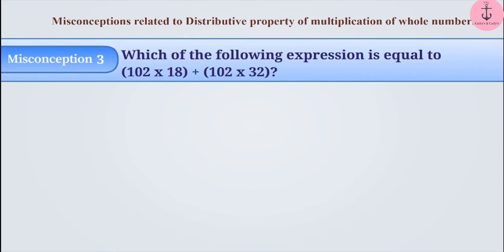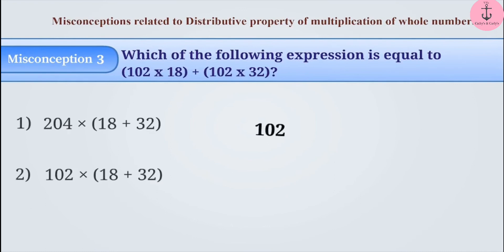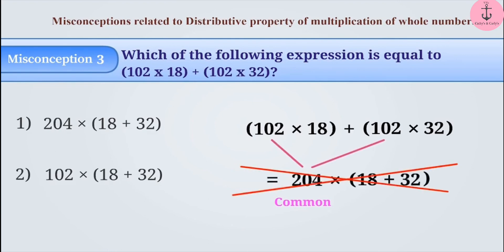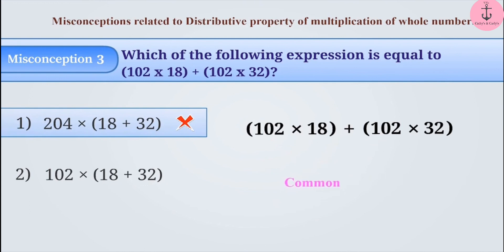Misconception 3: which of the following expressions is equal to 102 into 18 plus 102 into 32? While taking 102 as a common term, sometimes 102 from the first bracket is added to 102 in the second bracket, so option 1 is incorrect. The correct understanding is that the common number is written outside the brackets and the numbers it was multiplied by are added inside the brackets. With this understanding, option 2 is the correct answer.